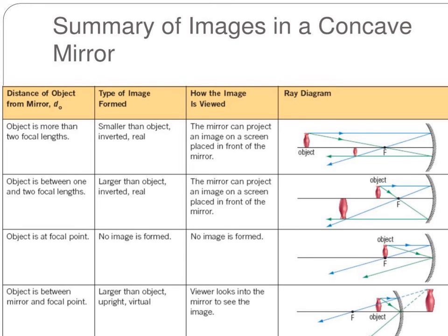When the object is placed between one or two focal lengths, or between F and C, then the image will be formed larger than object, inverted, and real.